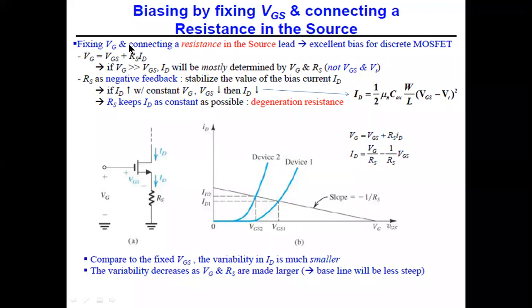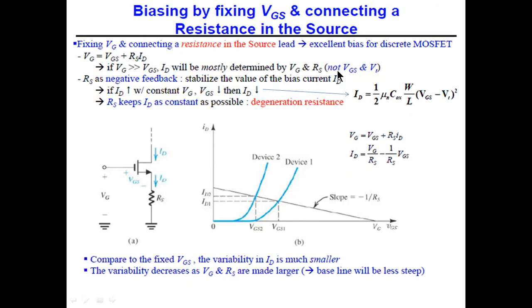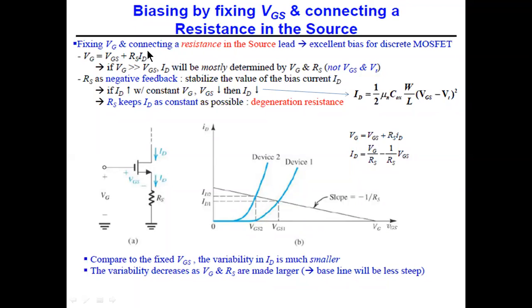Generally VG is much greater than VGS, so ID is mostly determined by VG and RS rather than VGS and VT. The resistor RS acts as a negative feedback element. Negative feedback stabilizes the bias current ID — recall that positive feedback is used in oscillators, while negative feedback stabilizes amplifiers.